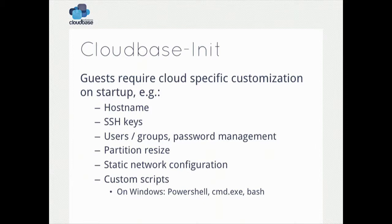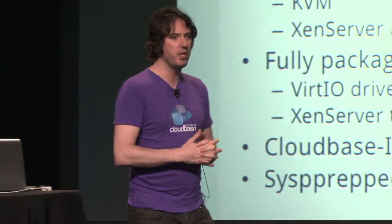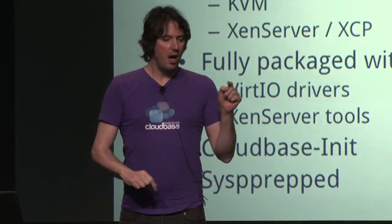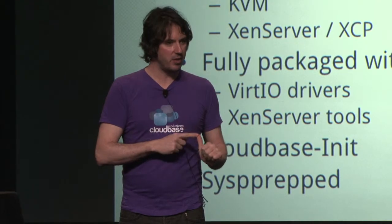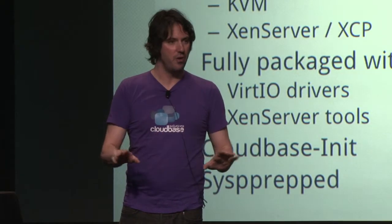Now let me introduce a very important new thing — great news. We had permission from Microsoft to deploy and release a fully packaged version of Windows Server 2012 evaluation, standard edition, already packaged for OpenStack. You can see a snapshot here of how it looks. I believe there is no other company that was able to do something like this with Windows Server 2012 until now. Take care that this is the evaluation version, available only for testing. It's ready for Glance deployment — we provide images for Hyper-V and KVM, already packaged with the virtual drivers, for Xen Server and XCP with Xen Server tools, and with CloudBase Init and sysprep on top. You just download the image, put it in Glance, and off you go.